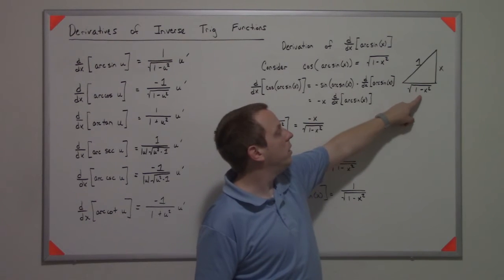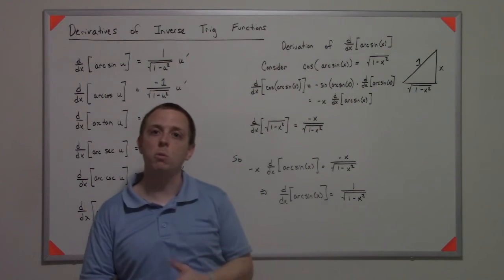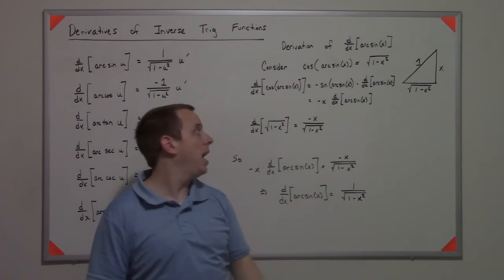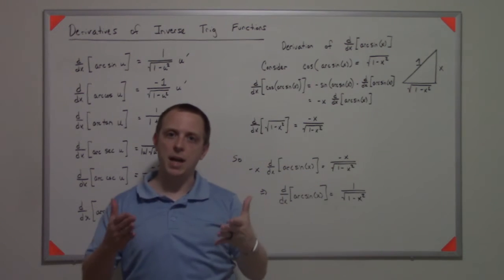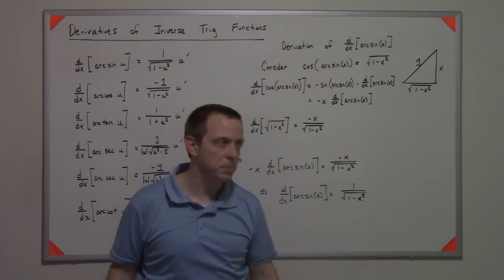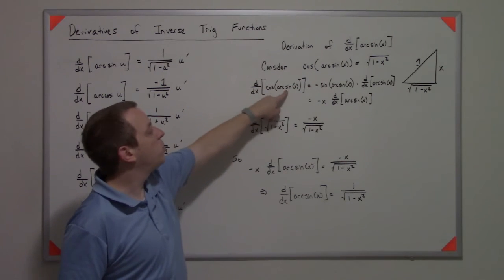By doing that, we can take the cosine of that angle to get adjacent over hypotenuse, which is the square root of 1 minus x squared. The reason we want to do that is now I have an expression here and an expression there, and I can take the derivative of both sides.